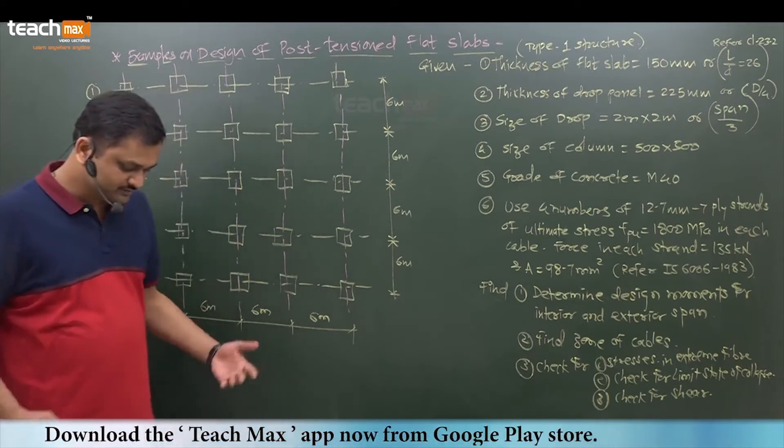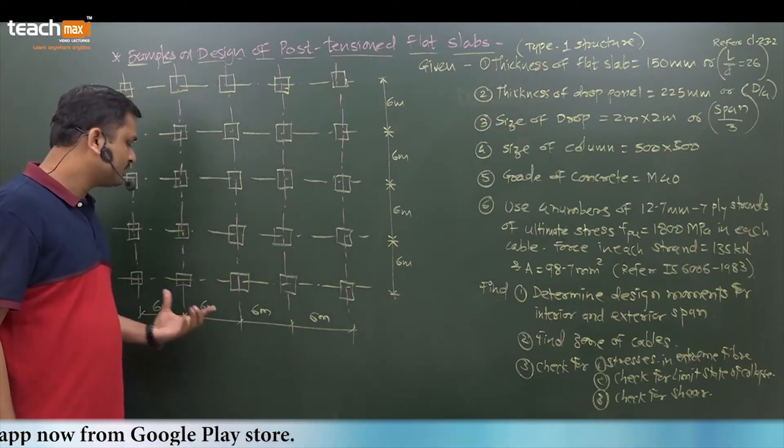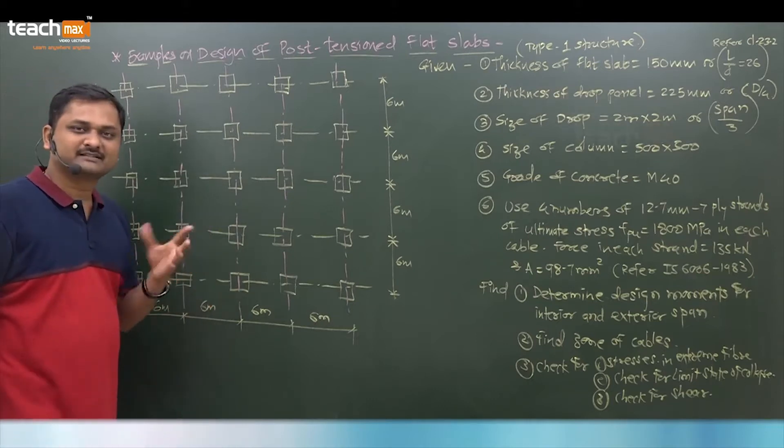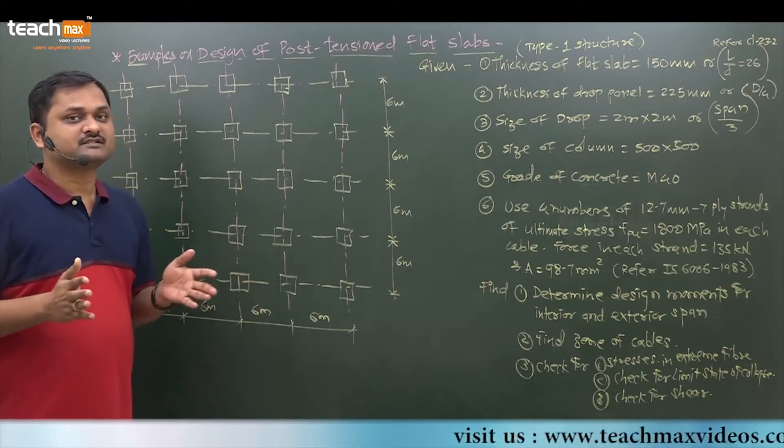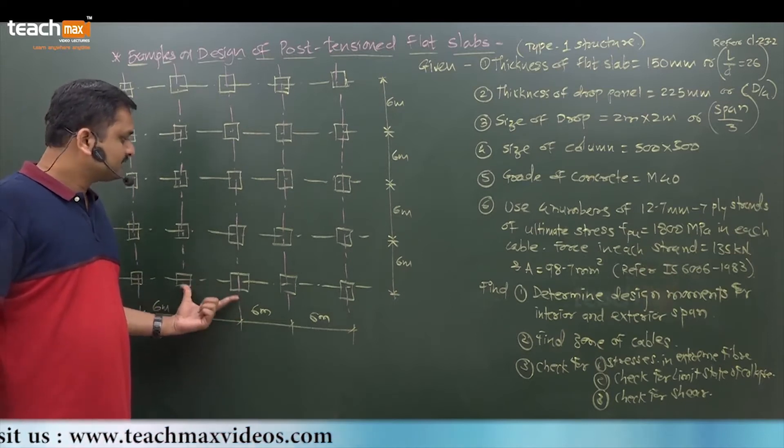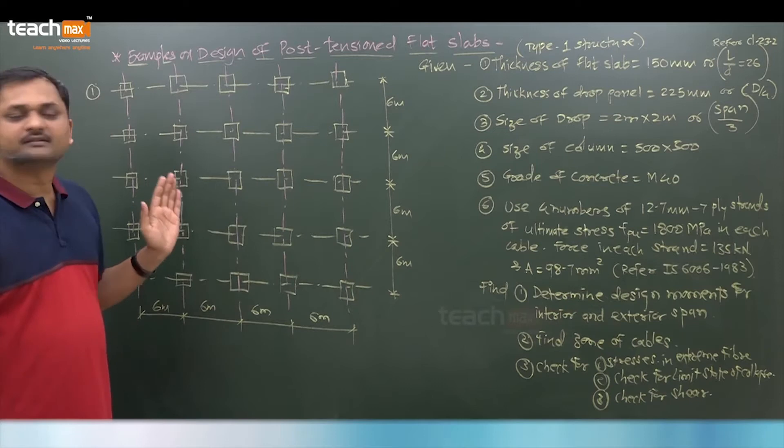Here we are going to solve one example on this. Generally the floor system is given to you. This is the floor system of each panel of size 6 meter by 6 meter. As we know, the range is from 6 meter to 15 meter. These are 6 meter by 6 meter panels, symmetric sections with symmetric spans in both directions.